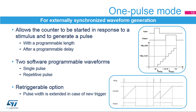The effective pulse width is then defined as the difference between the ARR and CCR1 register values. The waveform can be programmed to have a single pulse generated by the trigger, or to have a continuous pulse train started by a single trigger. One pulse mode also offers a re-triggerable option, where a new trigger arriving before the end of the pulse will cause the counter to be reset and the pulse width to be extended accordingly.